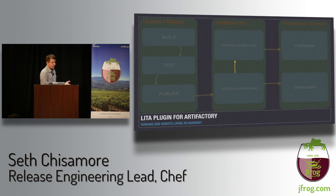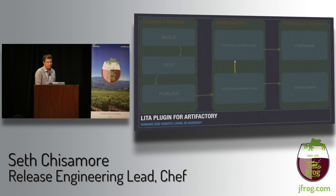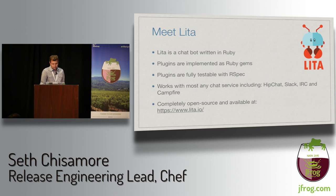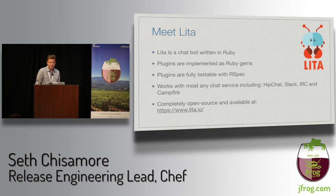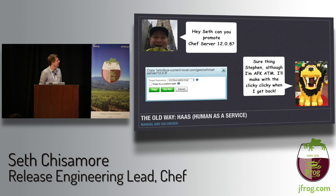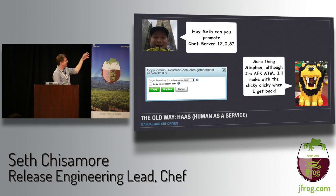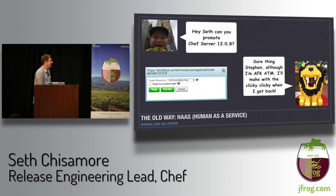Next, let's talk about how we do promotions — how we move something from the current local repo up to the stable local. We wrote a Lita plugin for Artifactory. In the old way: an engineer would yell in the release channel that something needed promoting. If a release engineer was around, they could get to it; if not, they'd have to wait. The actual promotion was done via the web UI — the release engineers became a bottleneck with no visibility into when promotions were executed.